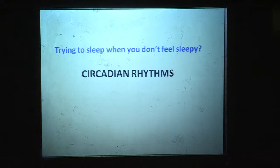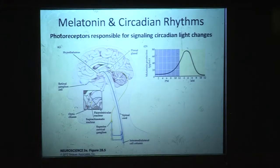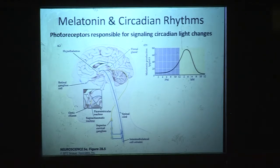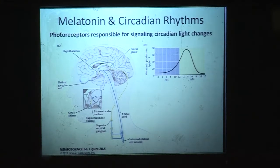Now for circadian rhythms and trying to sleep when you don't feel sleepy. Melatonin is a hormone secreted when it's dark. If you flash a light for just a second at night, your melatonin drops back to daylight levels. People take melatonin supplements for jet lag and to readjust to new time zones. The pathway involves special ganglion cells in the retina — not photoreceptors, just light-or-not-light detectors — that send a signal through the hypothalamus, down to the spinal cord, through the sympathetic superior chain ganglion, back up to the pineal gland, which makes the melatonin. Melatonin increases as darkness increases through the night.